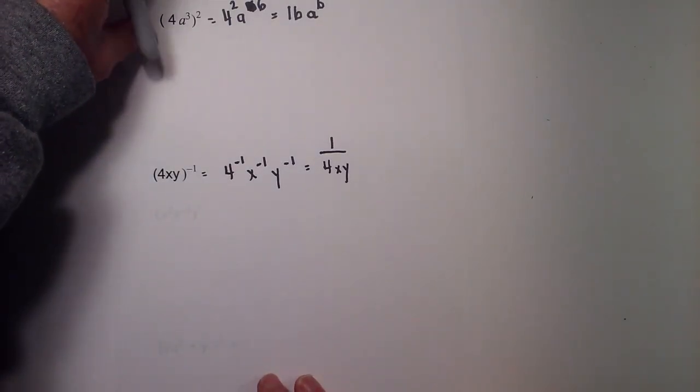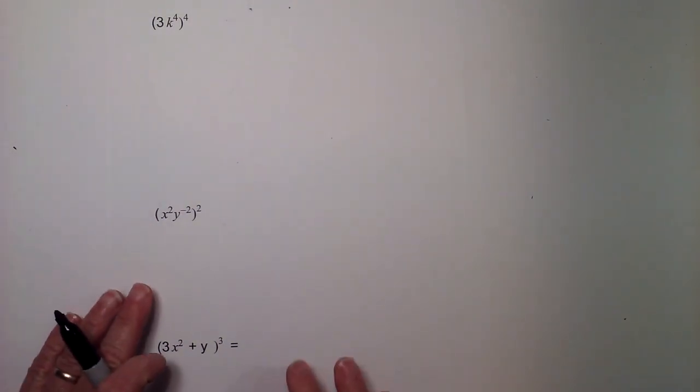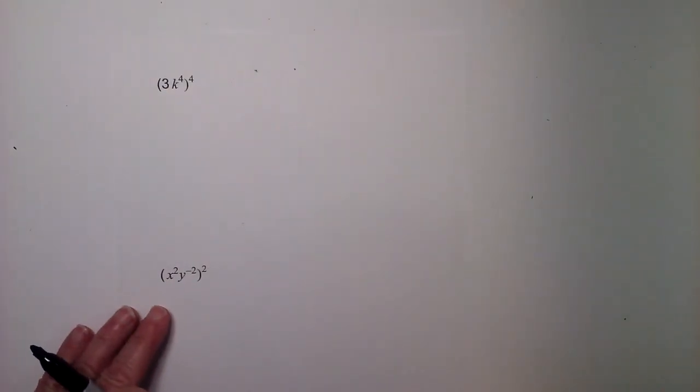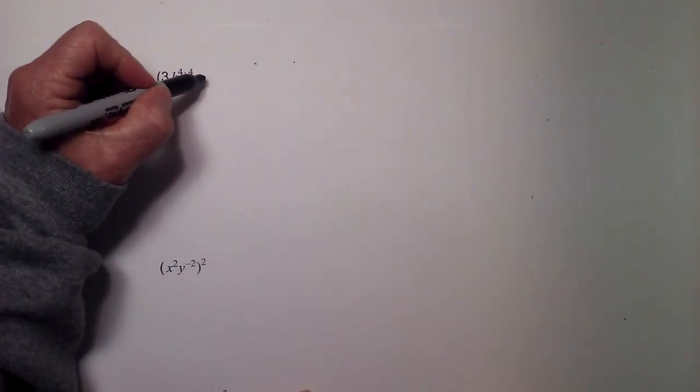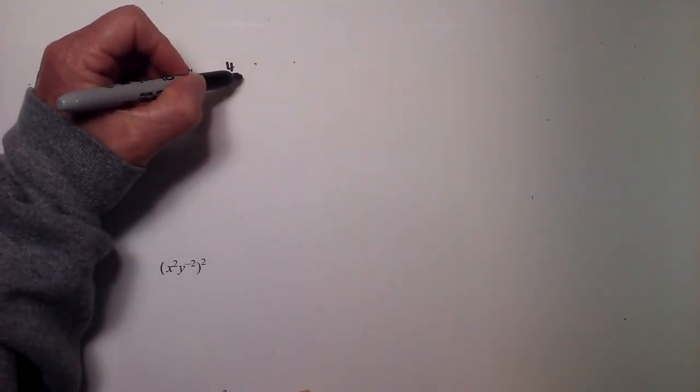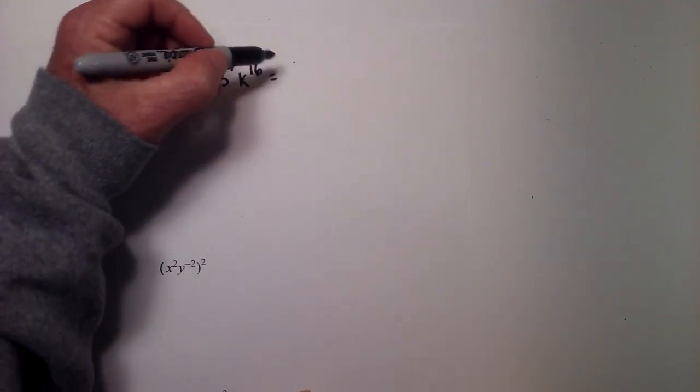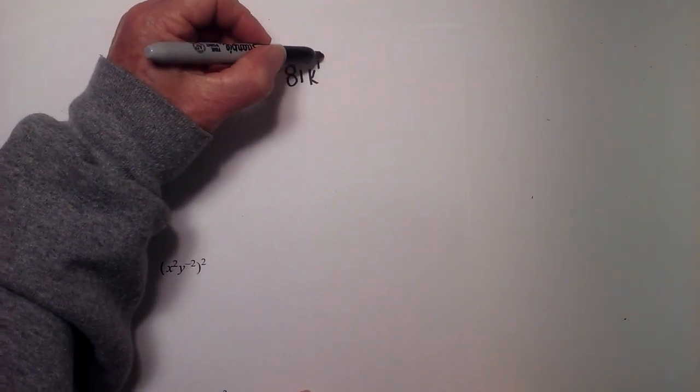Next we have 3K to the 4th raised to the 4th power. 4, 3 to the 1st would be 3 to the 4th power. 4 times 4 is 16, and that equals 3 to the 4th power is 81K to the 16th.